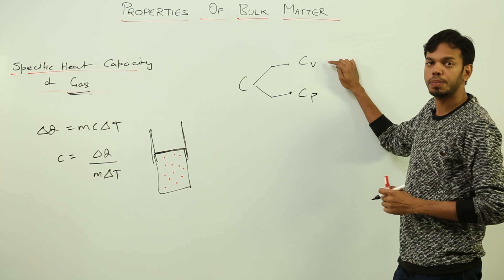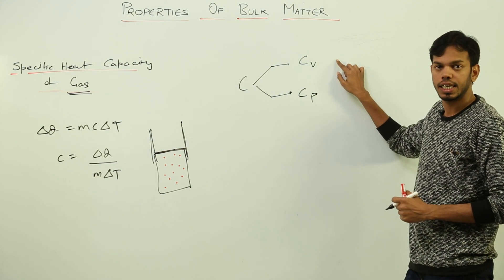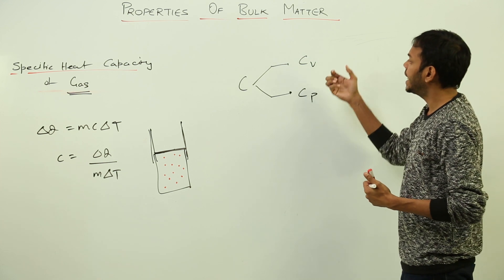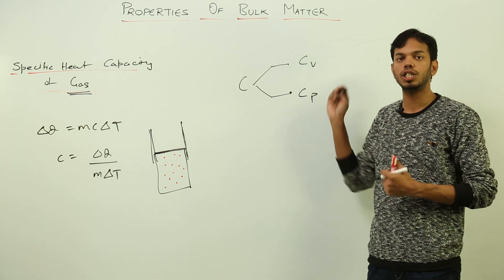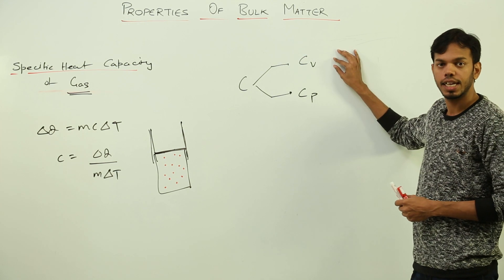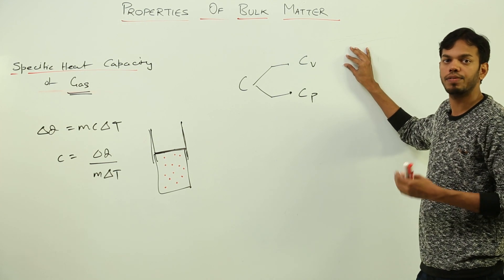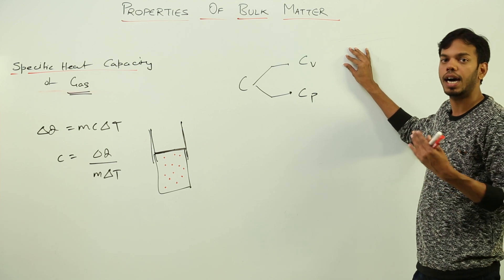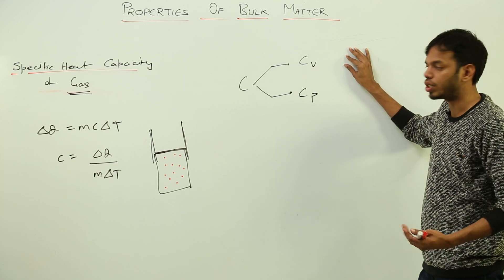The specific heat capacity of a gas at constant volume (Cv) is the amount of heat required to change the temperature of unit mass of gas by unit degree Celsius when the volume of gas remains constant.